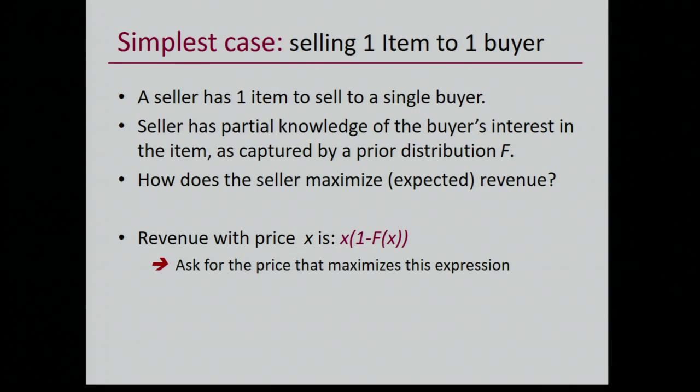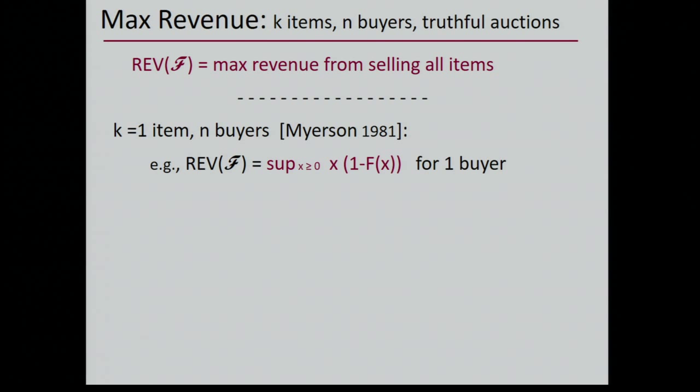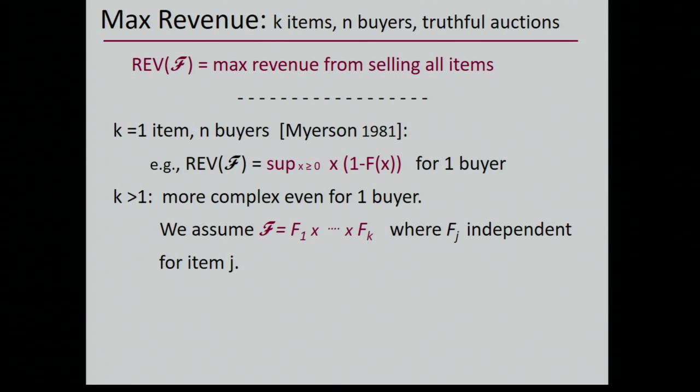For the multiple items and multiple buyers setting: for K equal to one item and N buyers, Myerson solves the problem completely. When K is greater than one, it's more complex, even for one buyer. Let's look at the one-buyer case under the assumption that the distributions of the items are independent.